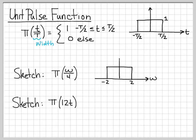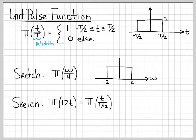What about the function π(12t)? How would we sketch that? This is a function of time, so we're plotting against the time variable t. We would like to get it into the form t divided by something so we can figure out the width. With a little algebra, we can write 12t as t divided by 1/12. Now we can tell the total width of this signal in the time domain is 1/12. So sketched as a function of t, it would extend from −1/24 to 1/24, for a total width of 1/12.